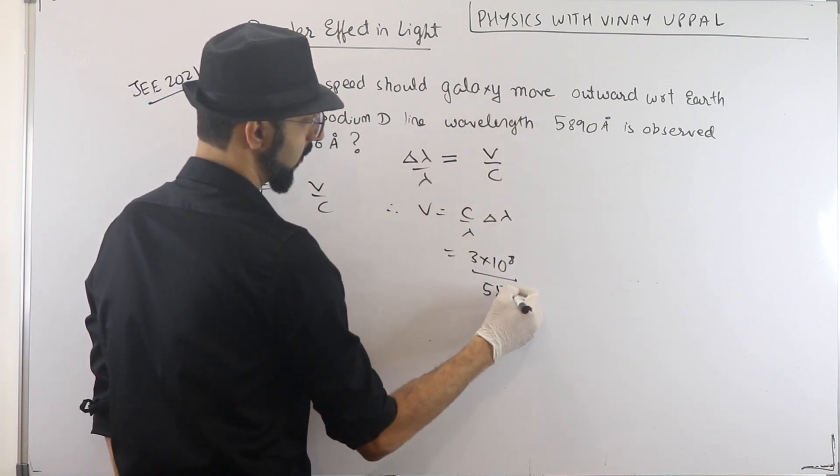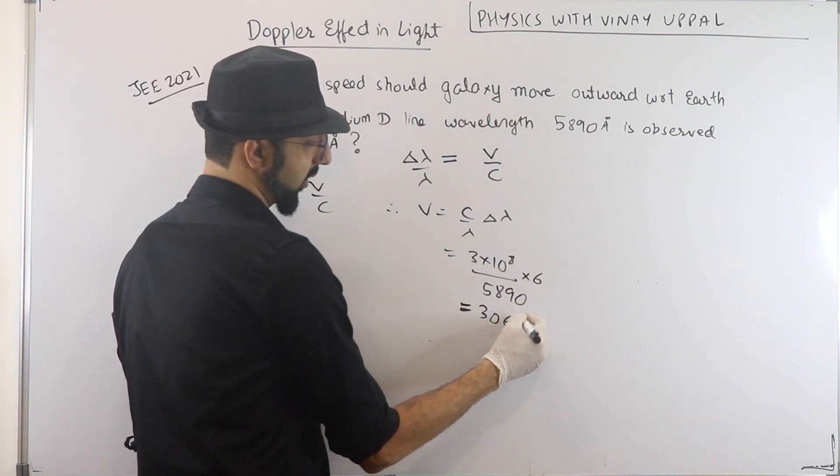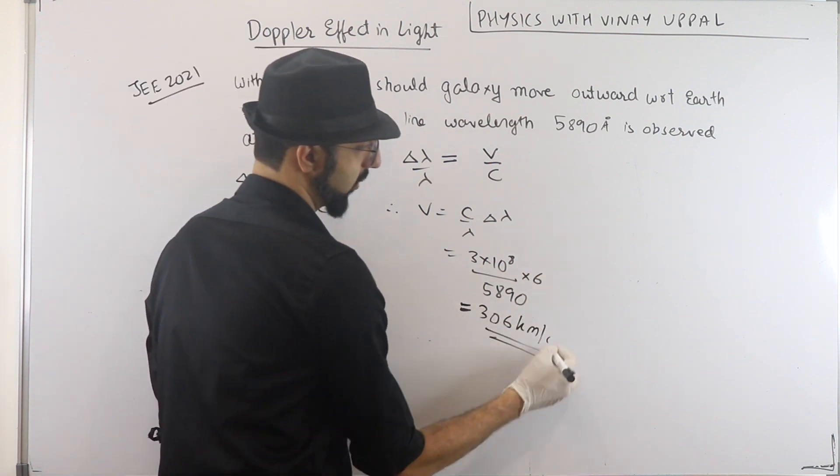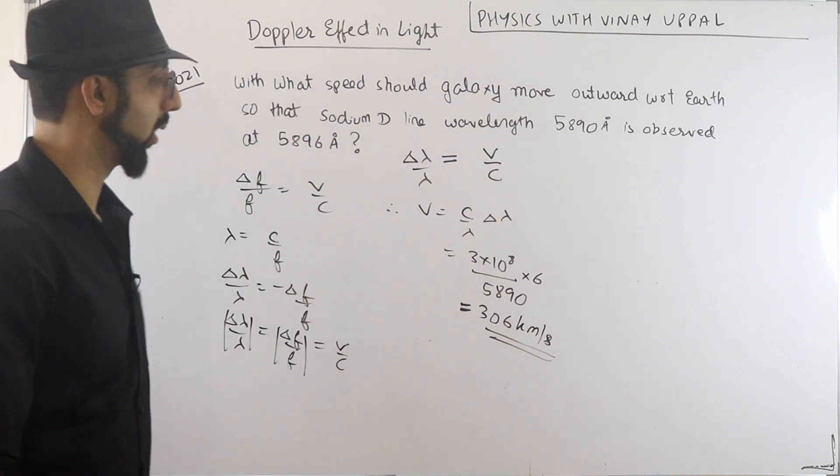And delta lambda kitna hai? 6. Around 306 km per second. So ye option tha. Thoda options close tha hai. Thoda sa accurate calculation karna padega. Alright. Dekhlo.